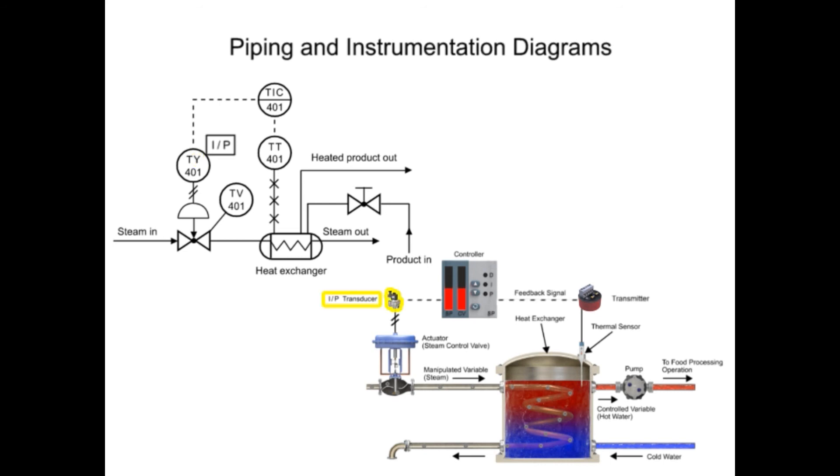The transducer converts an electronic signal to a pressure signal and is indicated by the square containing the letters I and P. The line with diagonal marks designates a pneumatic connection.